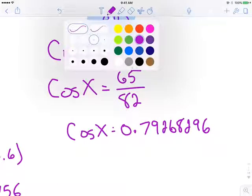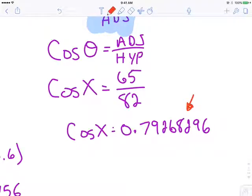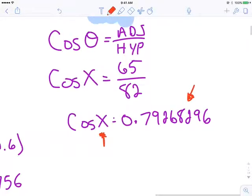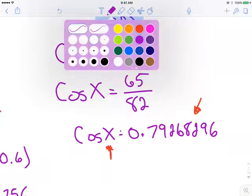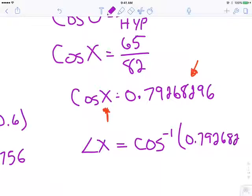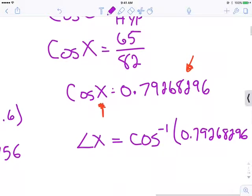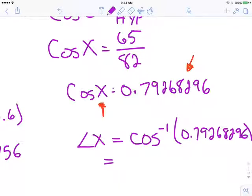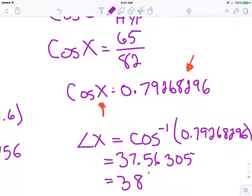And there's your hint. A ugly decimal number. Got to do one more step. Looking for an angle. Got to do one more step. So I go cosine minus 1. So angle x is equal to the inverse function of cosine of 0.7926896. That's supposed to be a 6. Equals 37.56305 or 38 degrees.